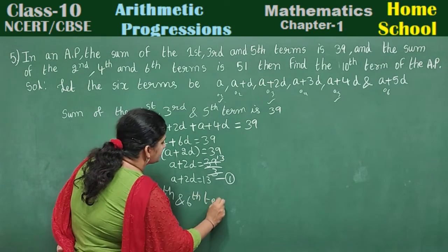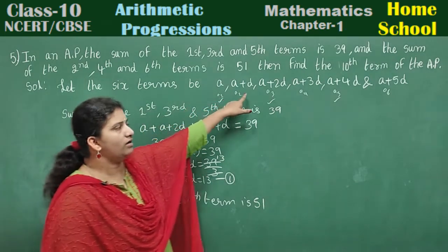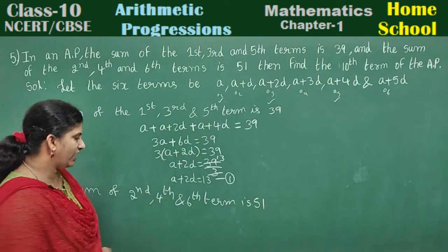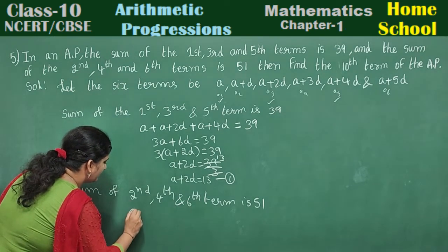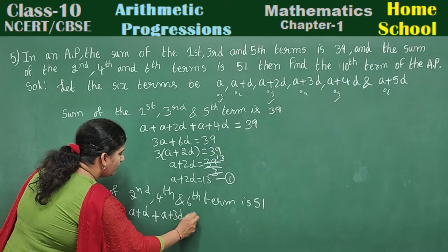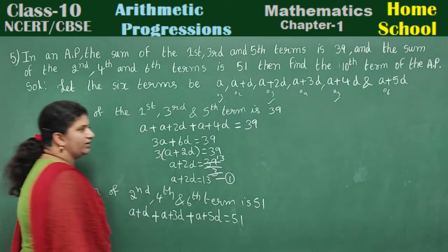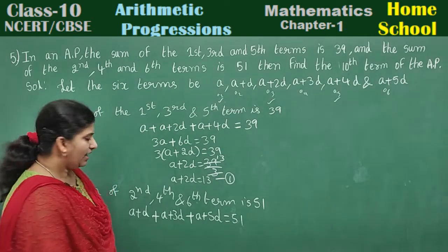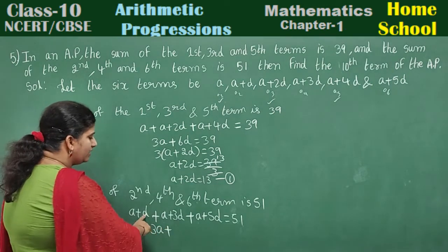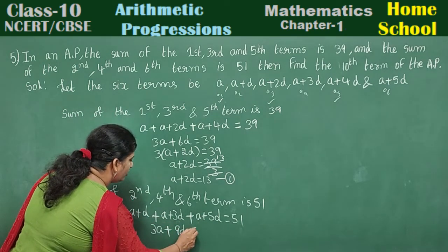Second term is a plus d, fourth term is a plus 3d, sixth term is a plus 5d. Write down: a plus d plus a plus 3d plus a plus 5d equals 51. Add all these: 3a plus 9d equals 51.